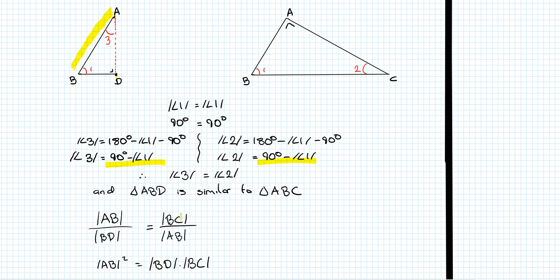We want to end up with AB squared, so AB must appear in both top-left and bottom-right positions. The ratio is: hypotenuse over small length in the small triangle equals hypotenuse over small length in the large triangle. Multiplying both sides by AB and by BD to clear the fractions, we end up with AB² = BC · BD.